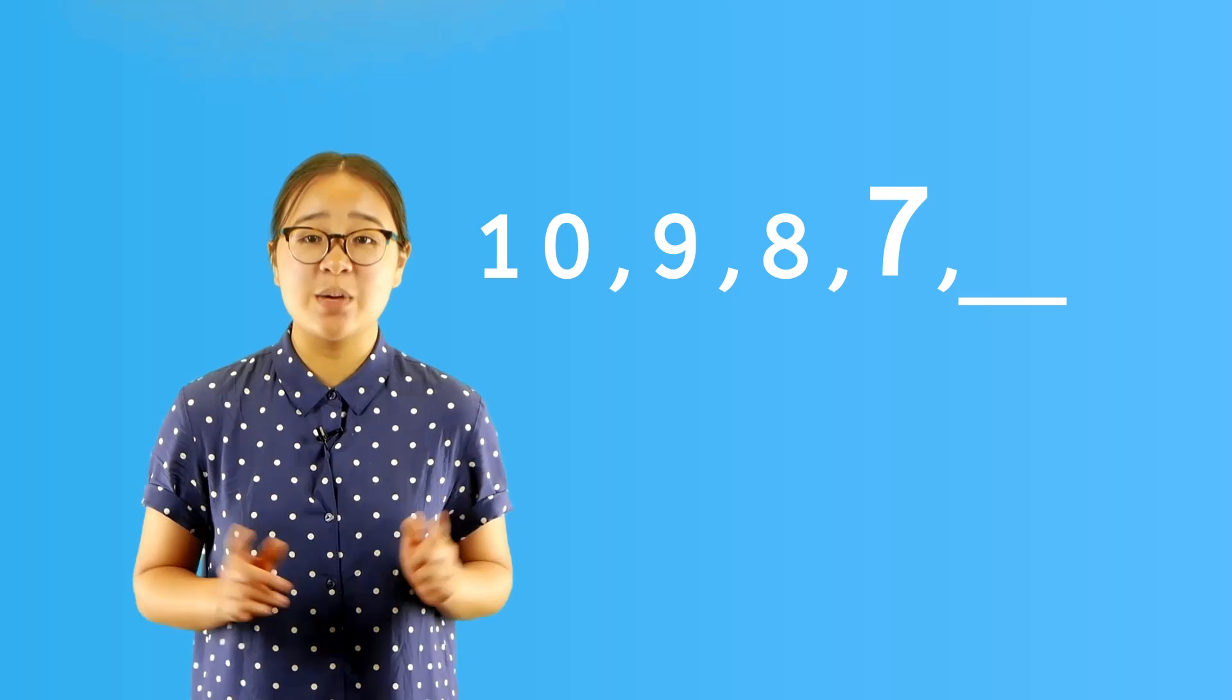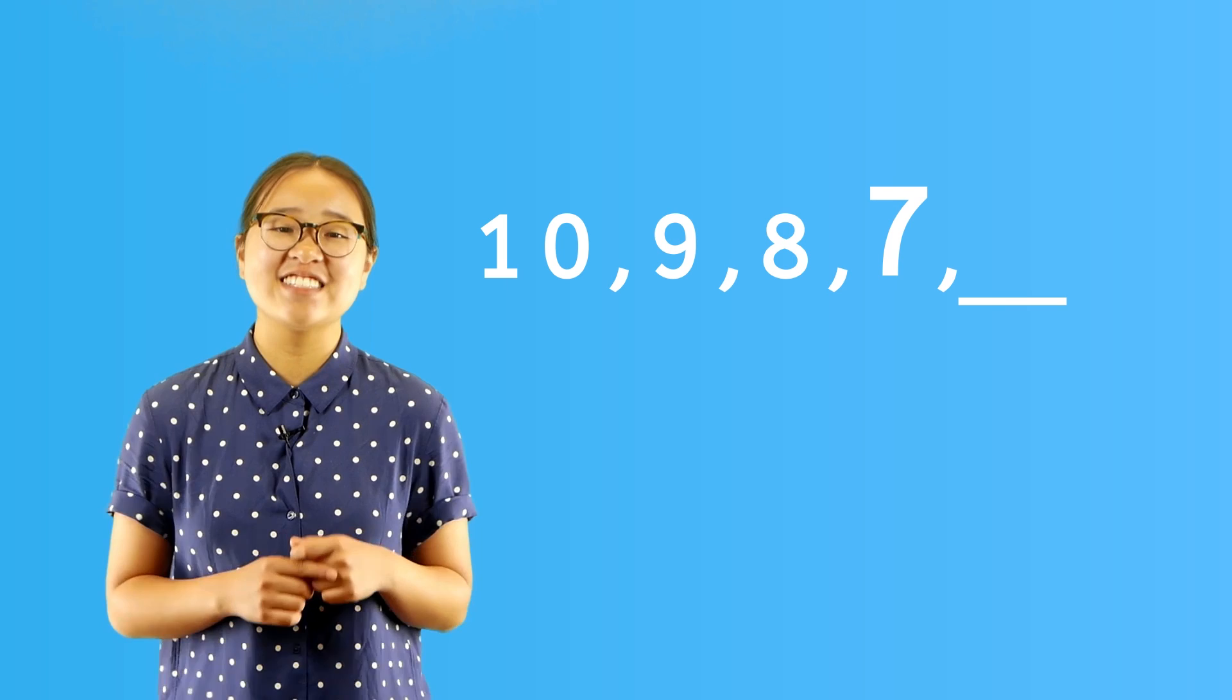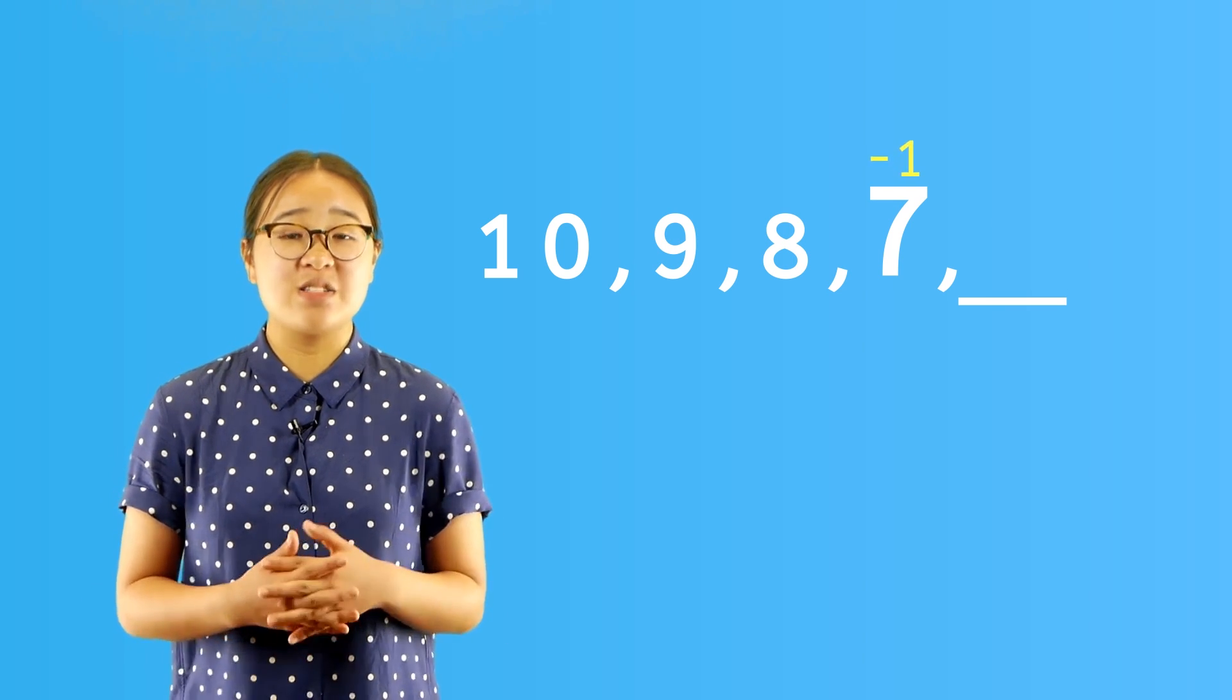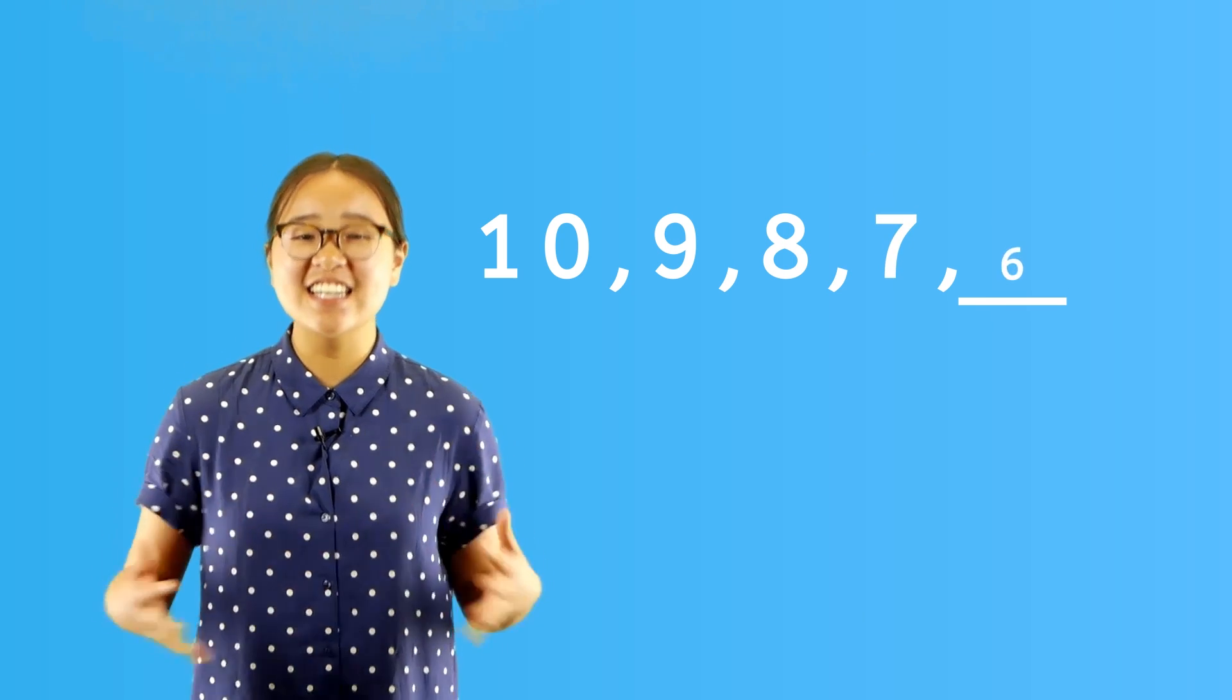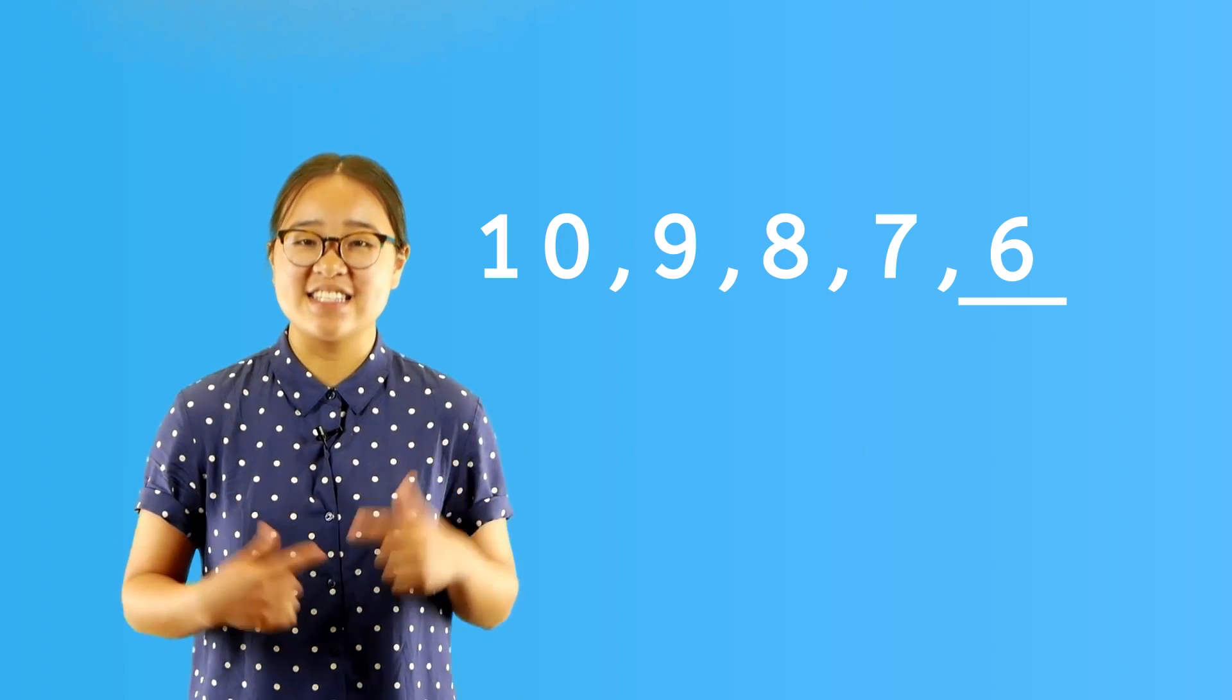That means the next number should also be subtracted by one to give us the next number in this sequence. Seven minus one is six. Yes, the next number in this sequence is six.